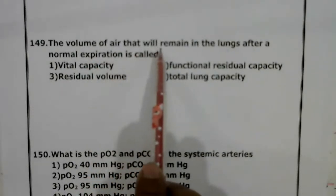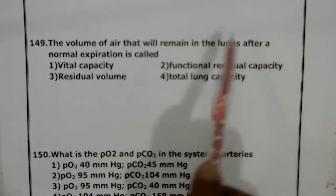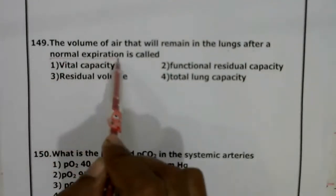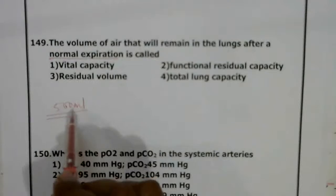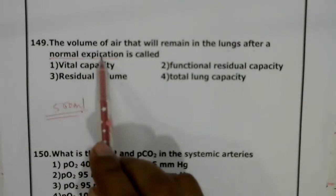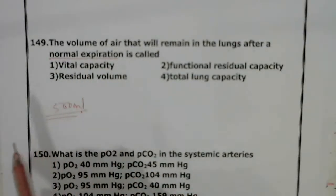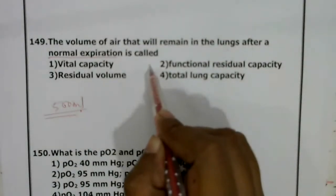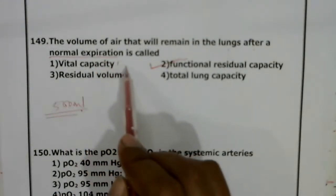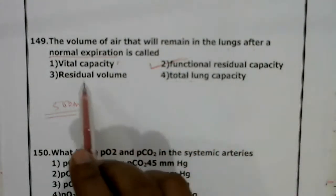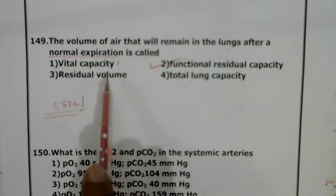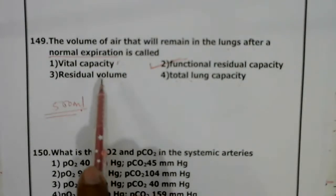Question 149: Volume of air that remains in the lungs after normal expiration is called what? After normal expiration, ERV and RV will still be left, together forming the Functional Residual Capacity. Vital capacity includes TV, ERV, and IRV. Residual volume is the air remaining after forceful expiration — it always stays inside the lung to prevent lung collapse.